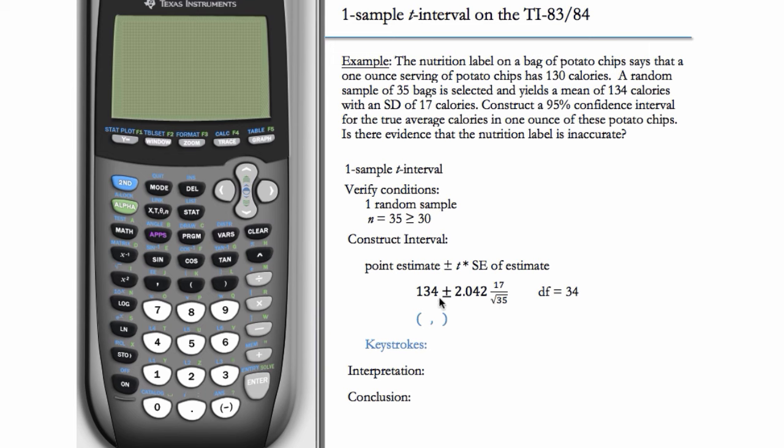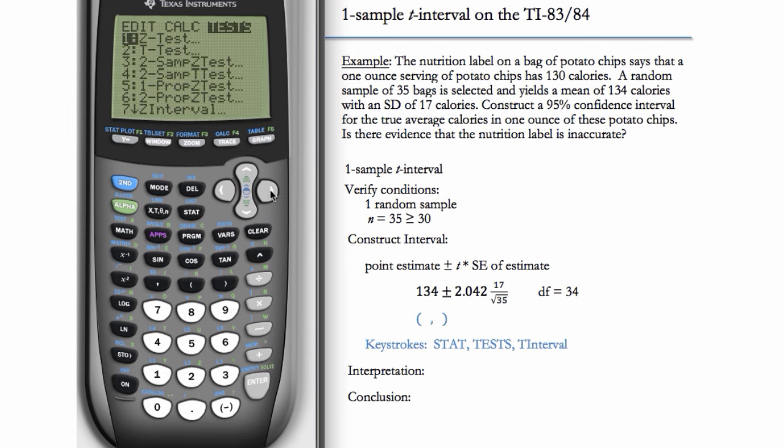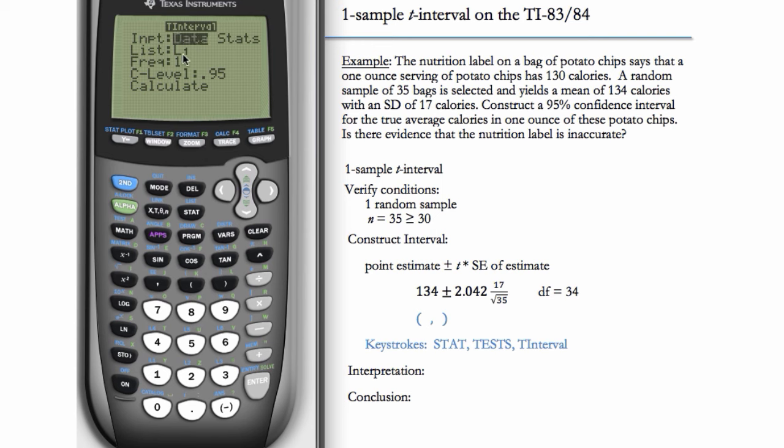And so now we can evaluate this manually or we can use the shortcut on the calculator. And the shortcut on the calculator is STAT, TEST, and then T INTERVAL. So we'll go to STAT, TEST, and scroll down to find T INTERVAL, hit ENTER. If we have the data, we can enter it into L1, always leave frequency as 1. But in this case, we have the stats, the summary stats, so we'll choose stats.